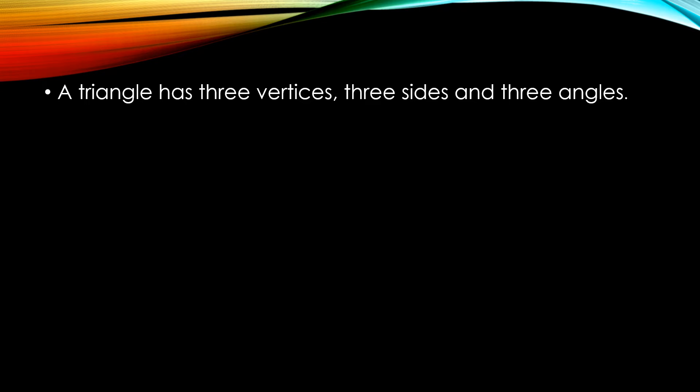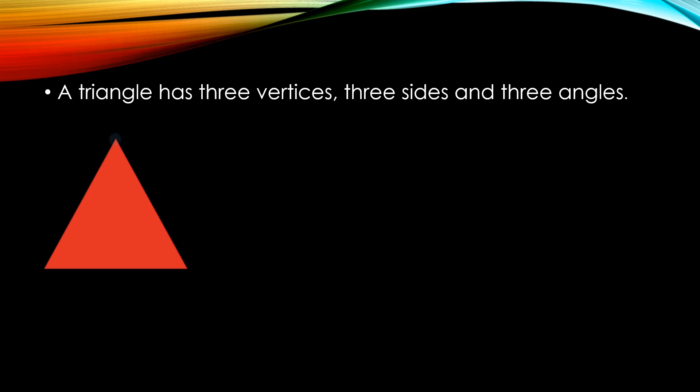A triangle has three vertices, three sides, and three angles. This is a triangle in which my vertices are A, B, and C. Clear? So, this triangle has three vertices.